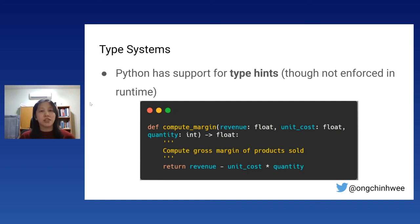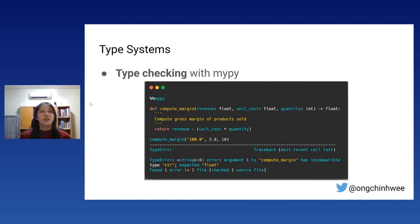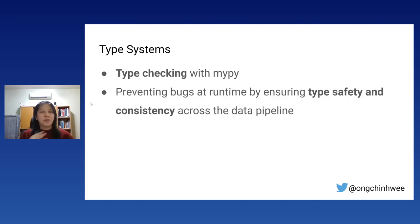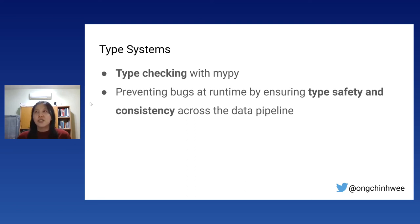Type systems are an important part of functional programming. Python supports type hints, though they are not enforced at runtime. We can use mypy to enforce a certain level of type checking in Python. Using type systems in functional code prevents bugs at development time by ensuring type safety and consistency across the data pipeline — so we know exactly what type the input and output are.